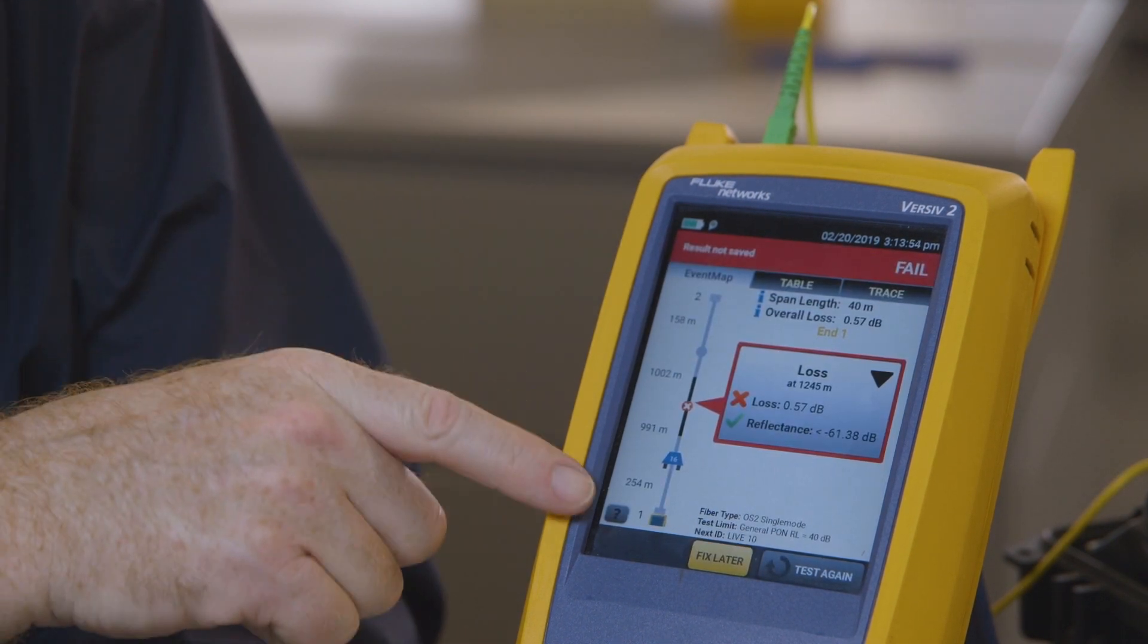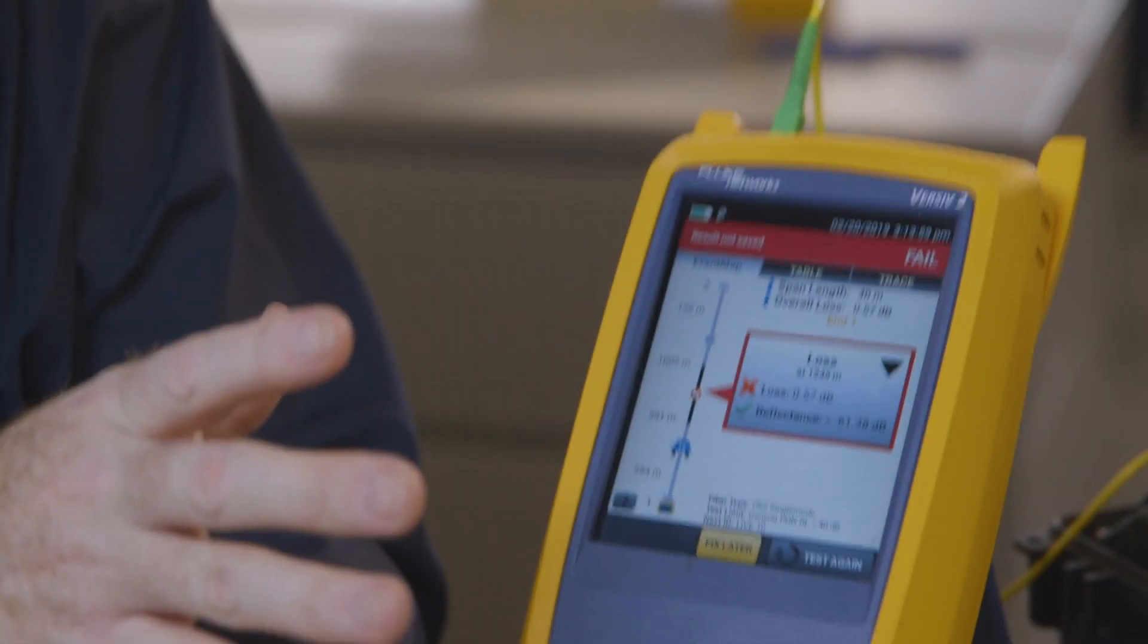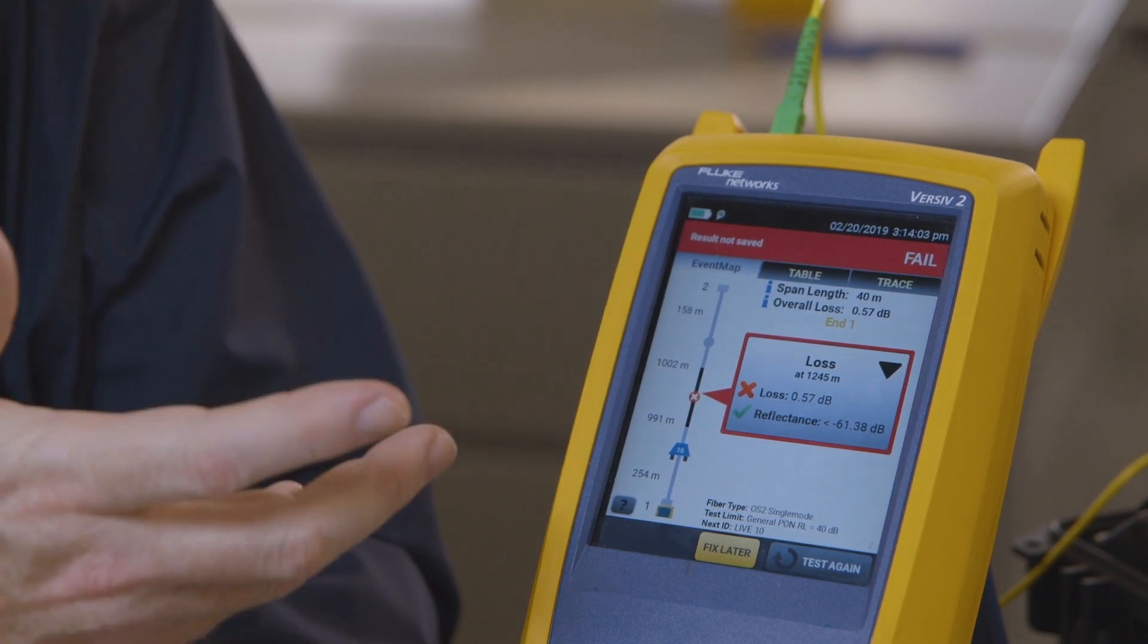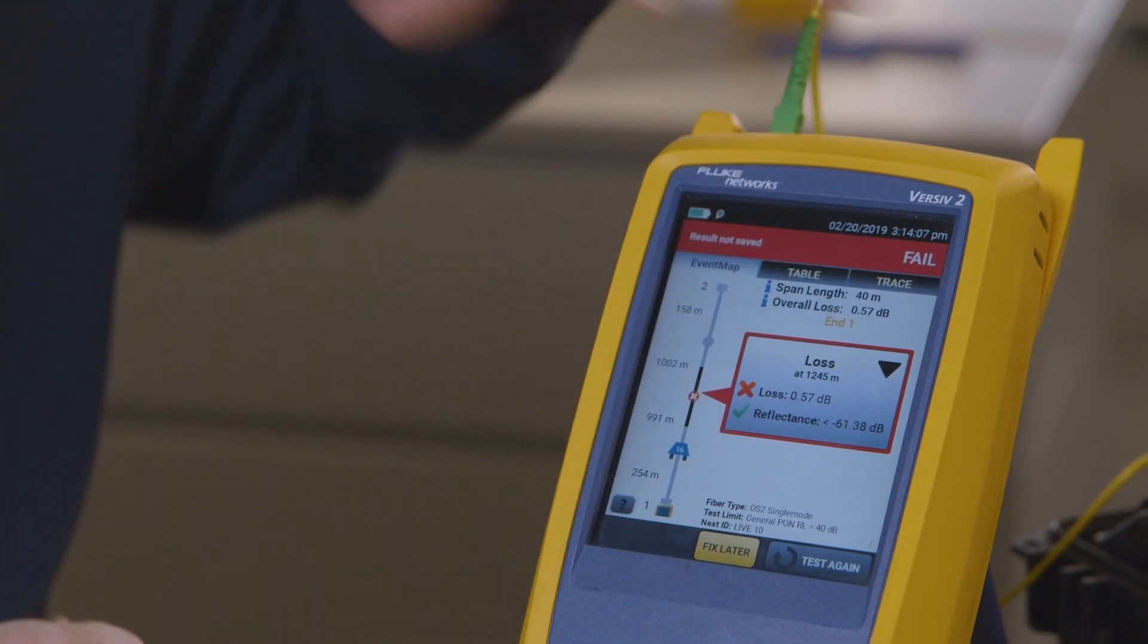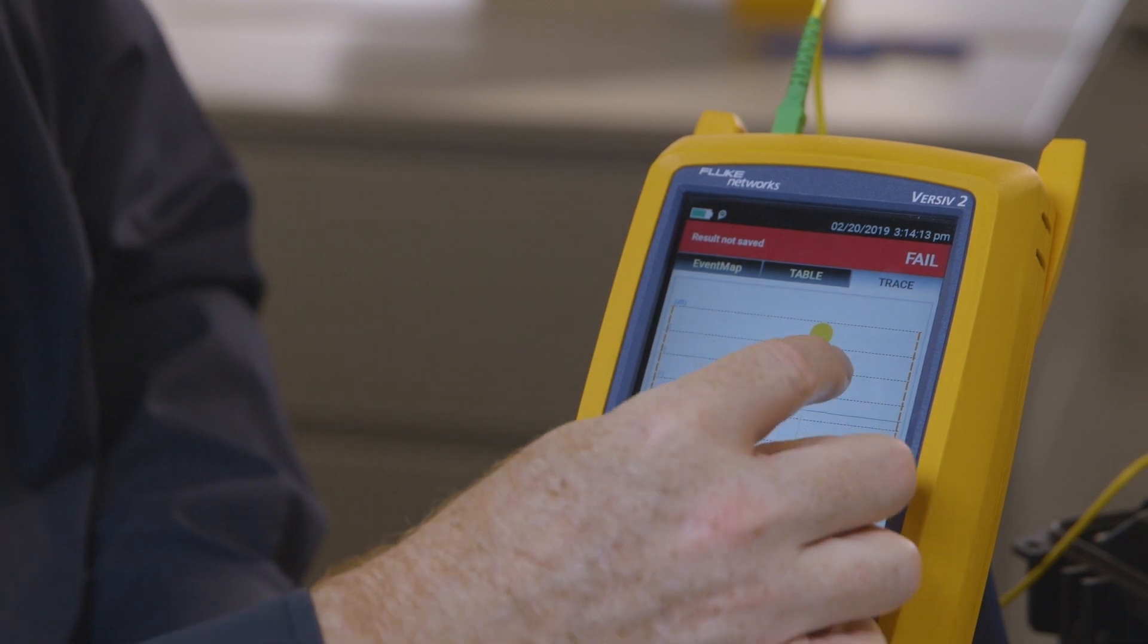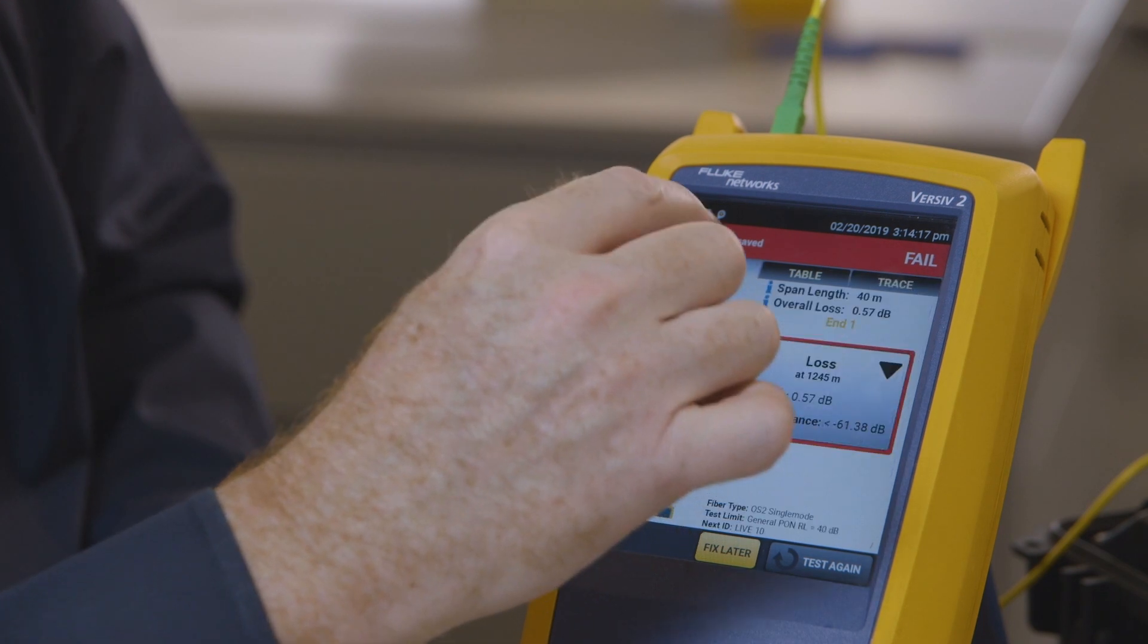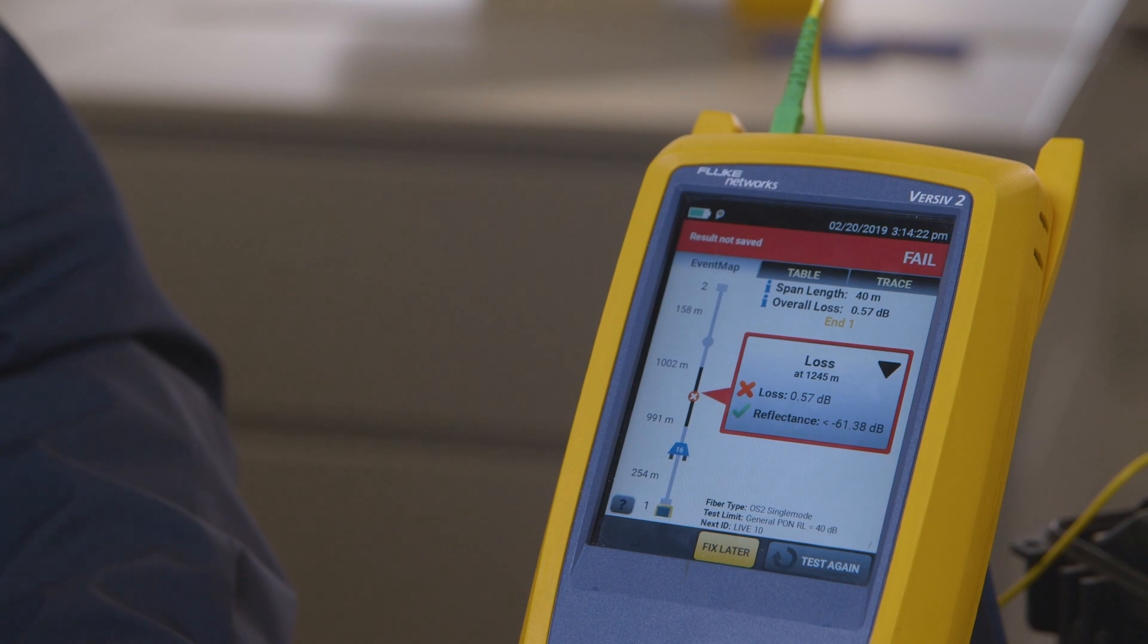Now what we see is the first part of the link here is grayed out, not part of the report. And the second section here is grayed out, not going to be a part of it. We just have this 40 meter section. That's what I'm worried about. Now unfortunately for me in that 40 meter section we have this loss event that has too much loss. My people didn't install a good fusion splice so we're going to be sending them back out there.